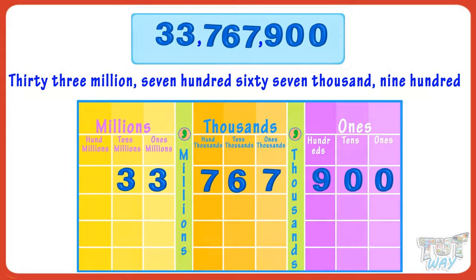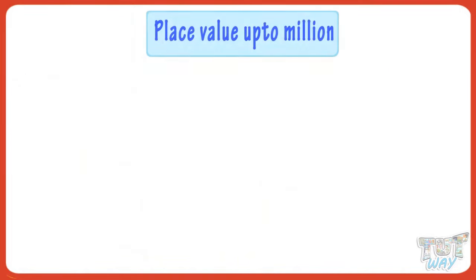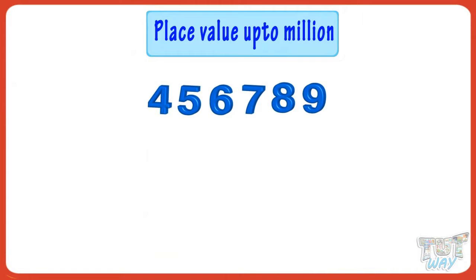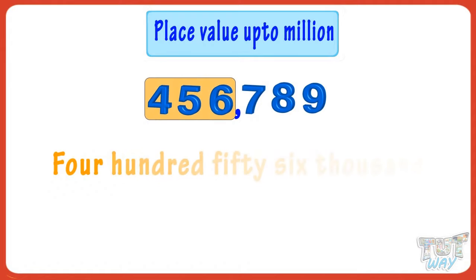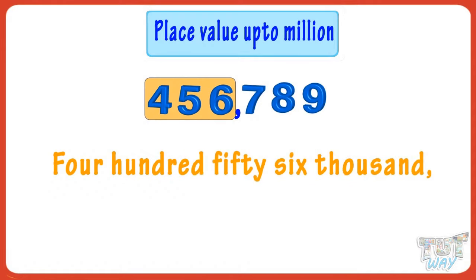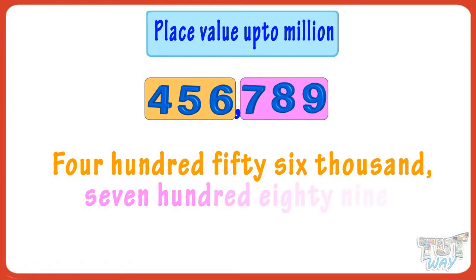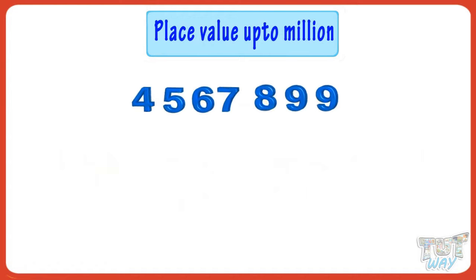Now let's put commas in some numbers. Starting from the left, put commas after every three numbers. No more comma is required as the digits left are three only. We will read this number — the name of the first comma from the left is thousands — so the number is four hundred and fifty-six thousand seven hundred and eighty-nine.